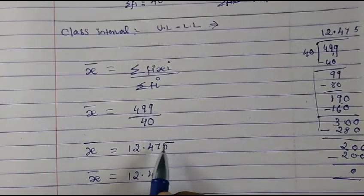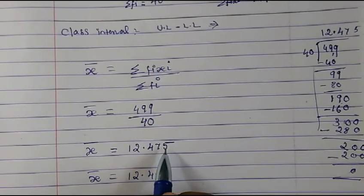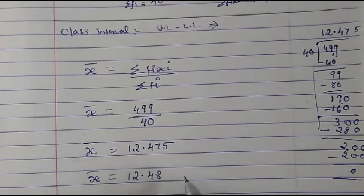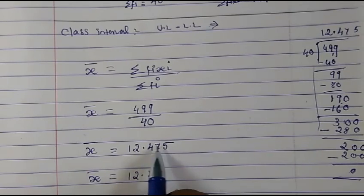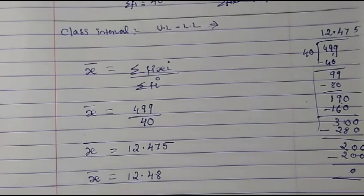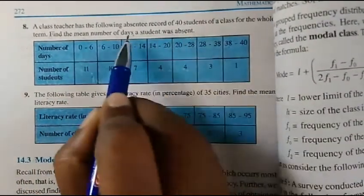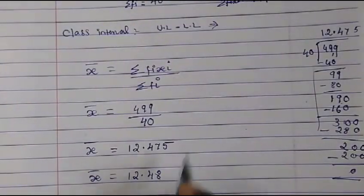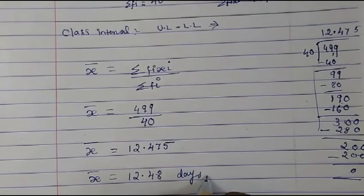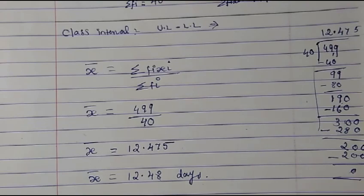The textbook answer is 12.48. Since the digit after 7 is 5, we round up — just like if you have four and a half marks we make it 5. So 12.475 rounds to 12.48. Therefore, the mean number of days a student was absent is 12.48 days. Thank you, God bless you.